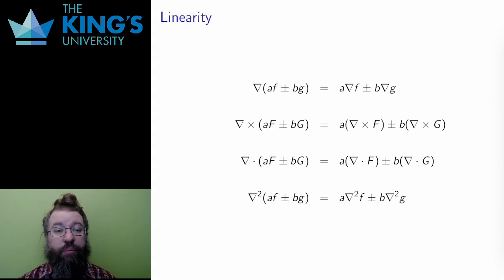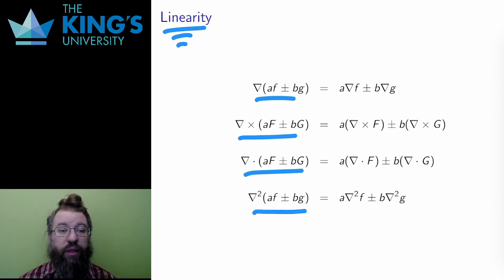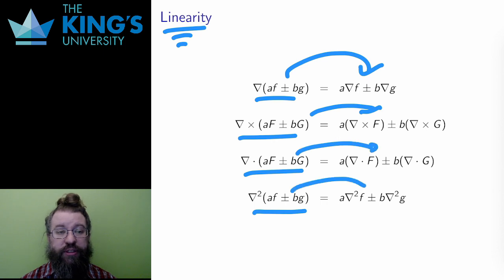Let me finish this video with some properties. First, all of the operations that use nabla are linear. Gradients of a scalar field, curl of a vector field, divergence of a vector field, and the Laplacian of a scalar field. In this slide, I use capital letters for vector fields and lowercase for scalar fields, which is a convention I'm going to stick with for the rest of the course. In each of these four, I can split up the operation over addition and subtraction, and I can pull out constants, as you've seen many times, for linearity.